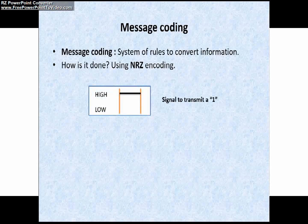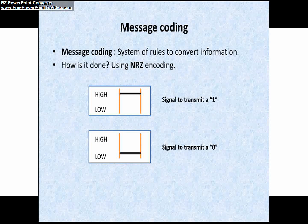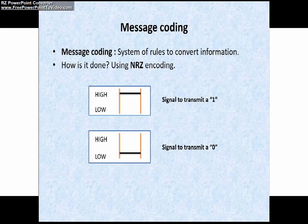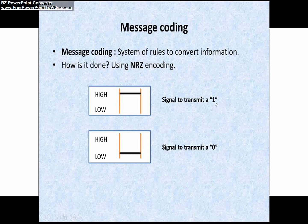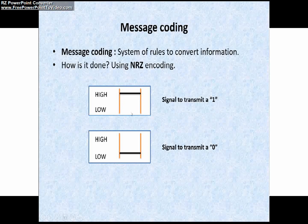In digital communications, NRZ is a binary code in which 1s are represented by a high positive voltage level. In CAN network, this high level represents a recessive bit — the signal stays at a high positive level during the bit interval. Similarly, binary zero is represented by a zero or low level, which corresponds to the dominant bit in CAN.